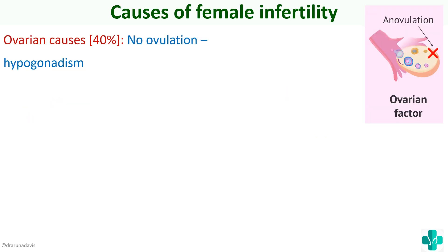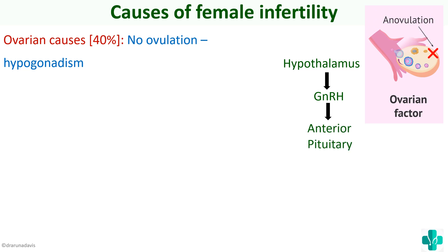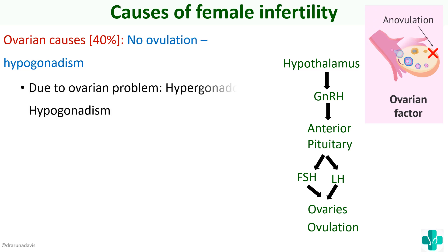First, ovarian causes — the basic problem is there is no ovulation, or there is hypogonadism. The hypothalamus produces GnRH (gonadotropin-releasing hormone), which acts on the anterior pituitary to produce FSH and LH, which in turn act on the ovaries to produce ovulation. In ovarian causes, ovulation is not occurring due to an ovarian problem — this is called hypergonadotropic hypogonadism, where FSH and LH are increased but the ovaries are unable to produce the ovum.